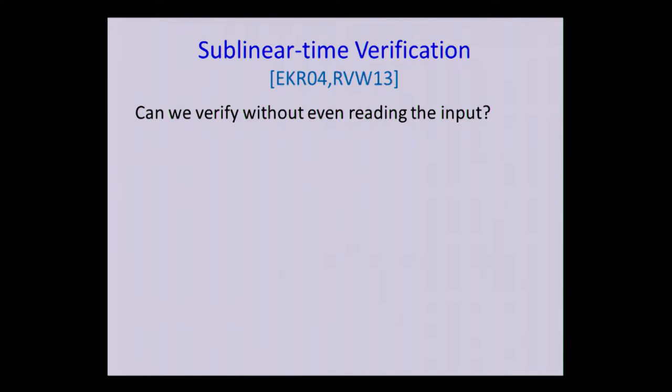And maybe the initial reaction to this question is an obvious no, right? We can think of a function that is very sensitive to bit flips. So think, for example, of you want to check if the parity of the database is zero, then the server can always just flip a random bit and supply a proof that corresponds to that tweaked database. And if you run in sublinear time, your chances of catching that are extremely low. So it seems as though a solution to this problem can be had.